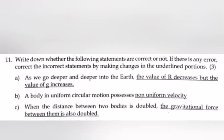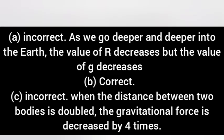Question 7: Write down whether the following statement are correct or not. If there is any error, correct the incorrect statement by making changes in the underlined portions. Answer A: Incorrect. As we go deeper and deeper into the earth, the value of r decreases, the value of g also decreases.